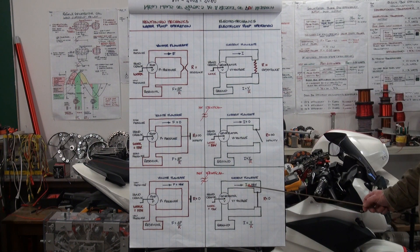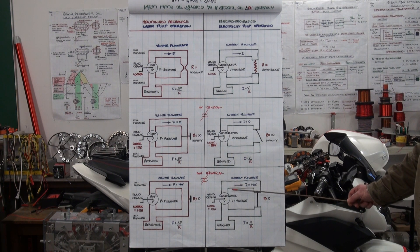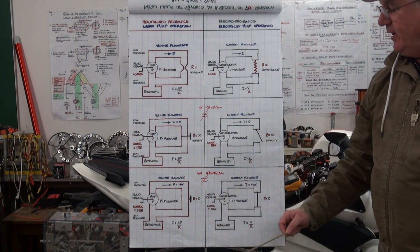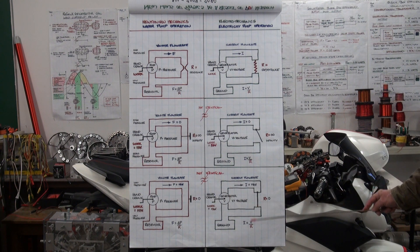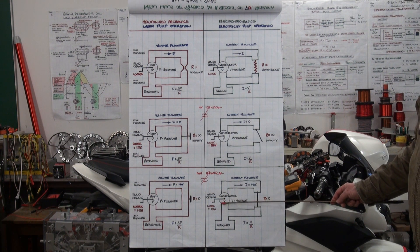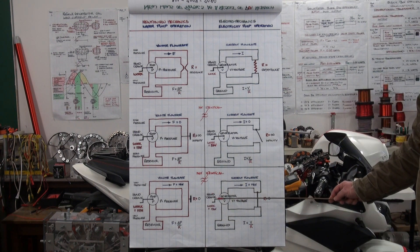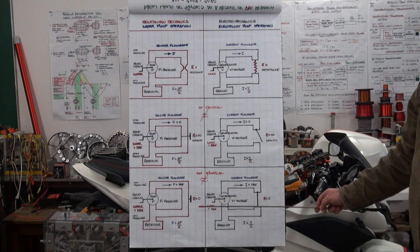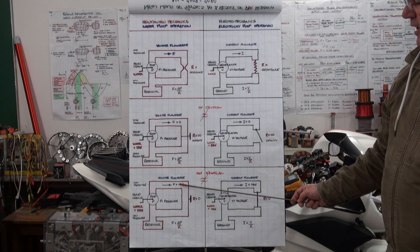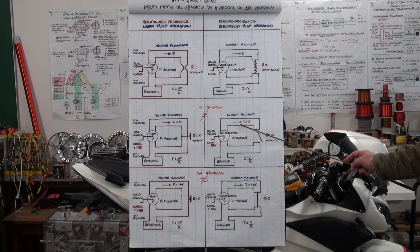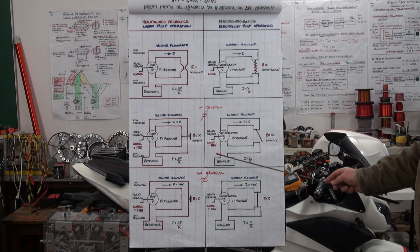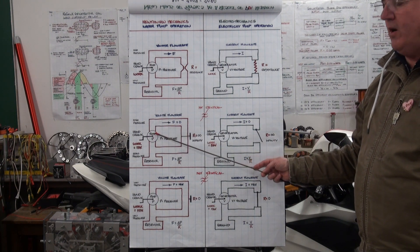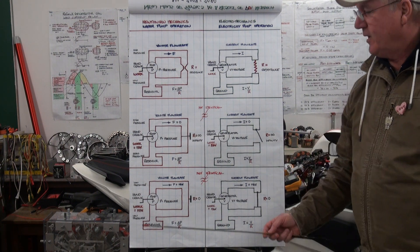Why is it hard to turn the generator? If the current in the circuit is high enough, it will be impossible to turn the generator. So why is it impossible to turn the generator when current is maximum in the electromechanics version, yet easy when current is maximum in the Newtonian mechanics version? And why is it easy when the current flow rate is zero in electromechanics, yet impossible to turn the water pump in the Newtonian mechanics version?